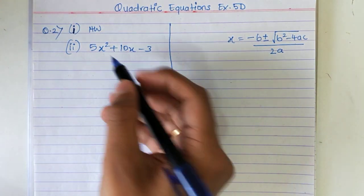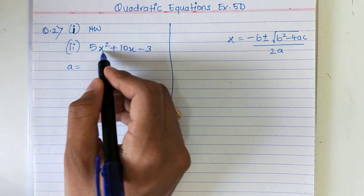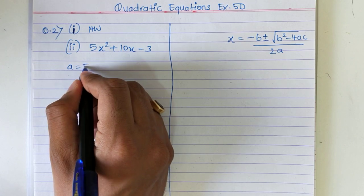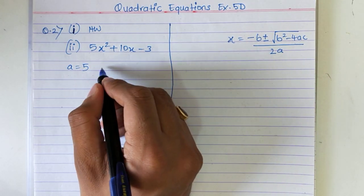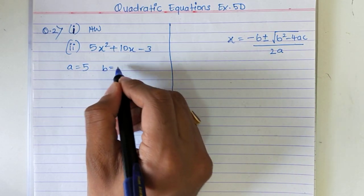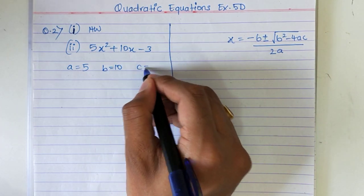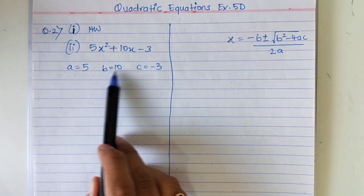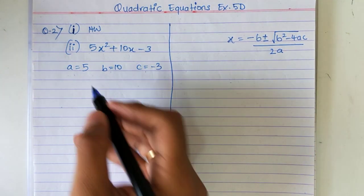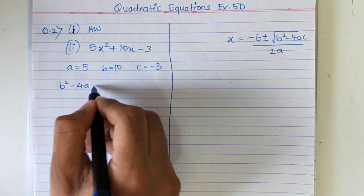In this, the value of a — the coefficient of x squared — is 5, the coefficient of x, b, is 10, and the last term c is minus 3. So once we know the value of a, b, and c, first find b squared minus 4ac.